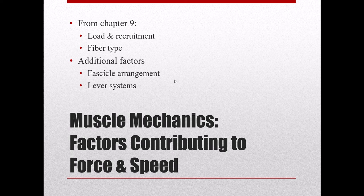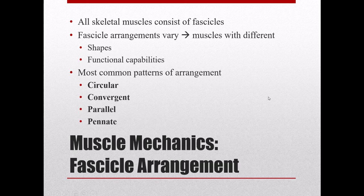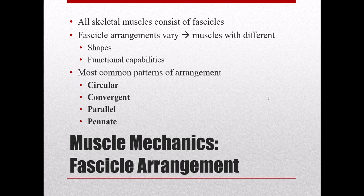Here in chapter 10, we focus on the arrangement of the fascicles — how fascicles are shaped into the muscle — and lever systems. All skeletal muscles have fascicles that get bundled together into fascicles, which then get bundled into a whole muscle, but the arrangement of those fascicles can vary. This gives us muscles with different shapes, and those shapes affect their functional capabilities. We have four common patterns: circular muscles, convergent muscles, parallel muscles, and pennate muscles.